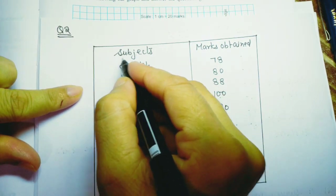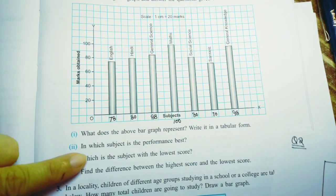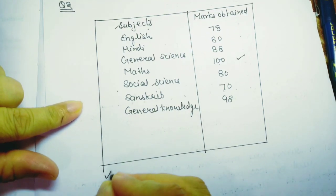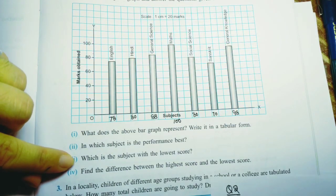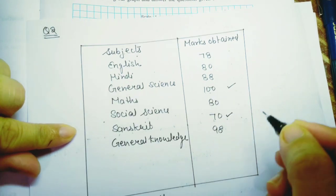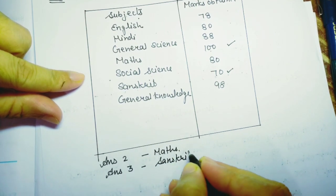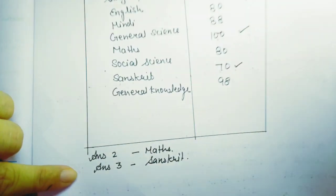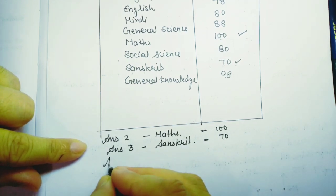In which subject is performance best? In Maths — the person scored the highest. Which subject has the lowest score? Sanskrit. Now we find the difference between the highest and the lowest score: highest is Maths at 100, lowest is Sanskrit at 70.